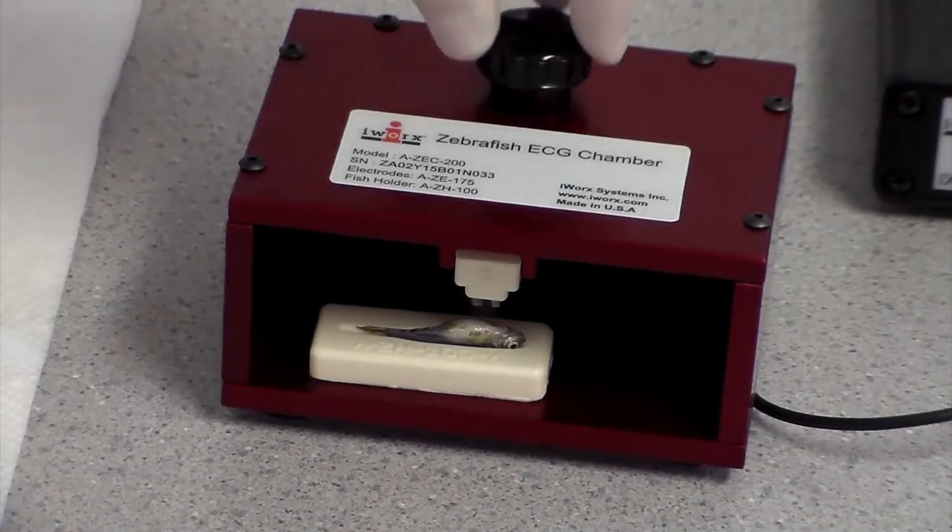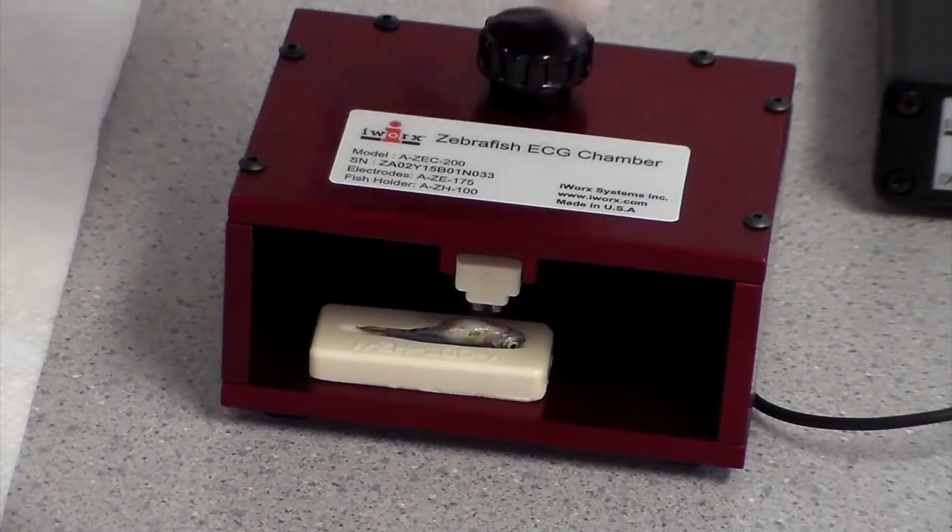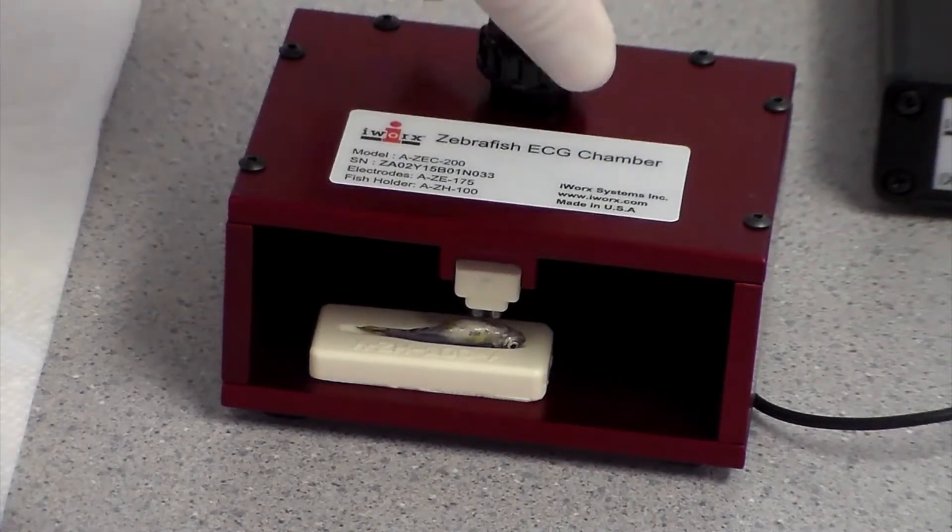Using the turn screw, lower the electrodes until they make contact with the fish.